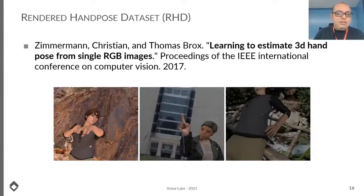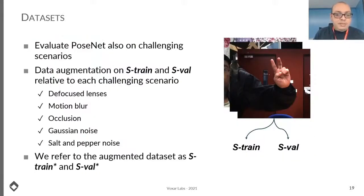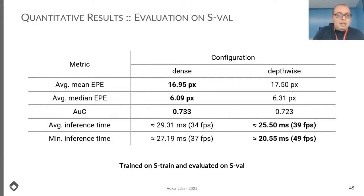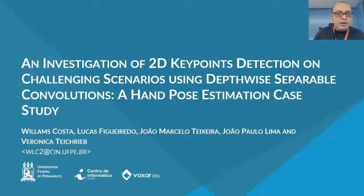We use two datasets for this evaluation. The first is the HandPose dataset comprising synthetic images, then we fine-tune using a dataset of real human hands. We divide them in train and evaluation splits, and propose an augmented dataset called S-train* and S-val*. Quantitative results on S-val indicate that although we have a loss of accuracy when swapping to depthwise convolutions, this loss is under one pixel and we achieve much better inference time. Qualitatively, there is not much difference in results.